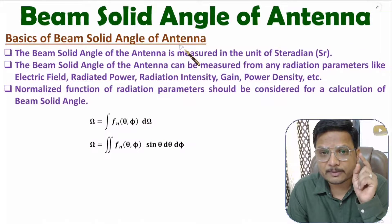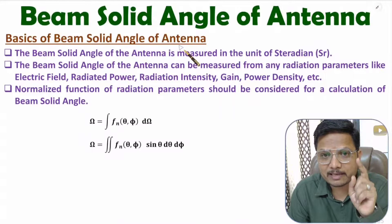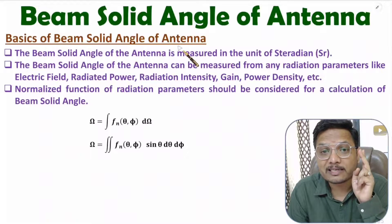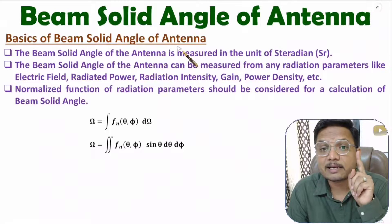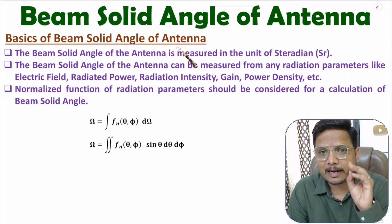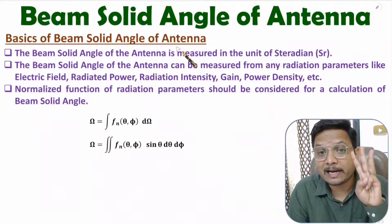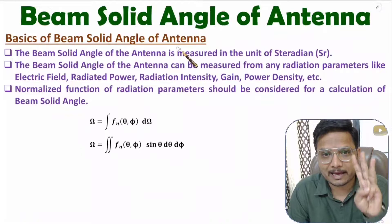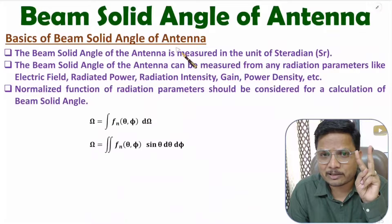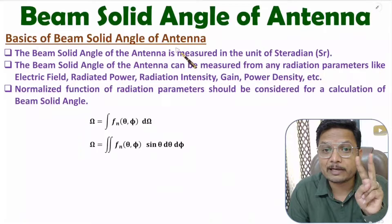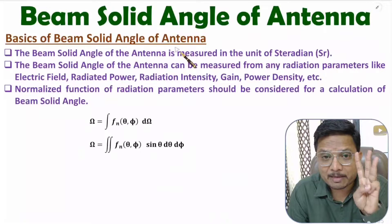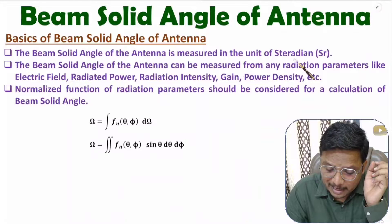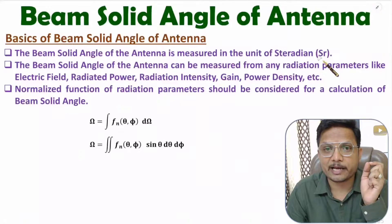Beam solid angle is measured in steradians. So the unit of beam solid angle is steradian, and beam solid angle is a three-dimensional angle. If you calculate a regular angle, that is just a two-dimensional angle measured in radians. But beam solid angle is a three-dimensional angle that we calculate in form of steradians.